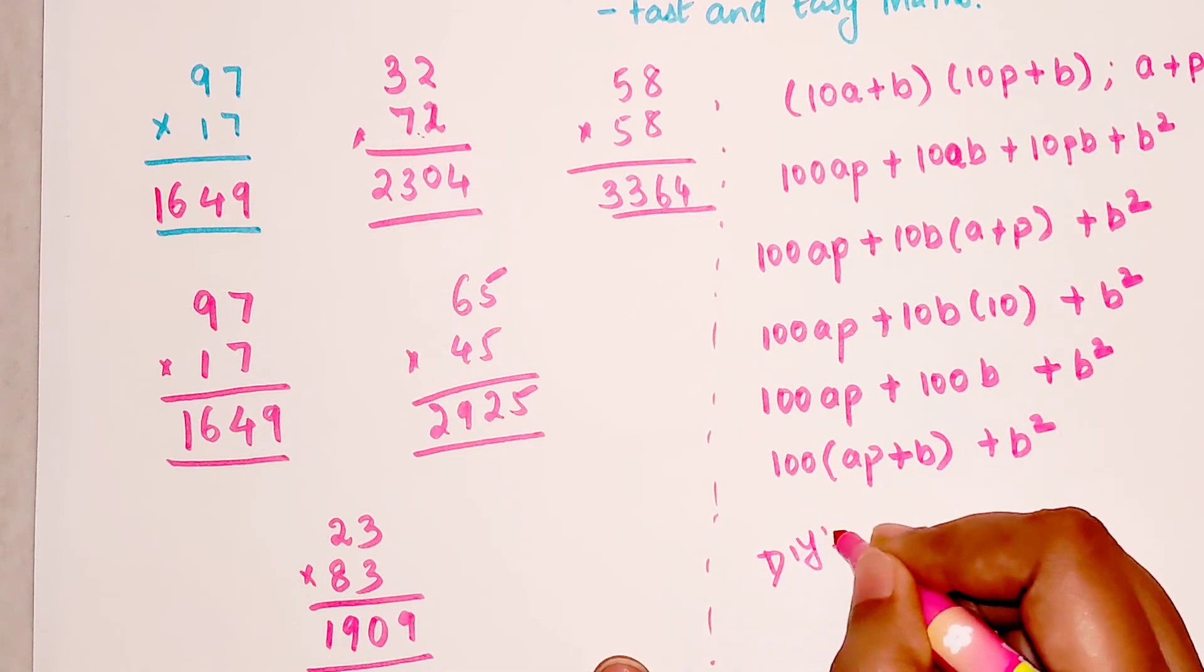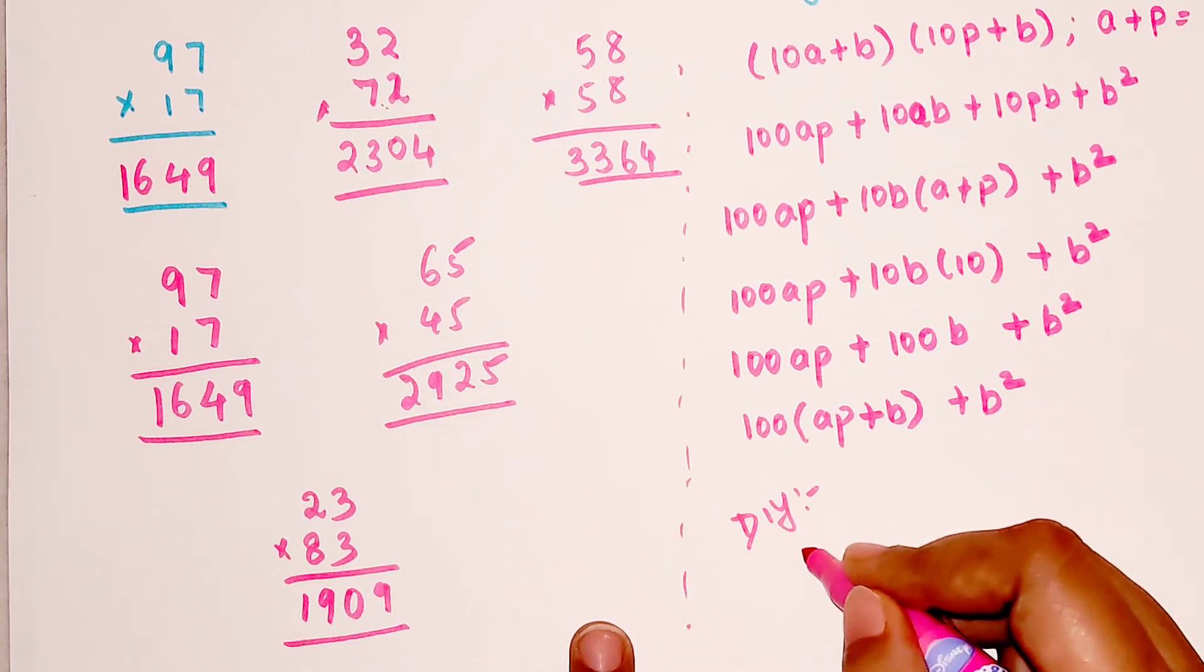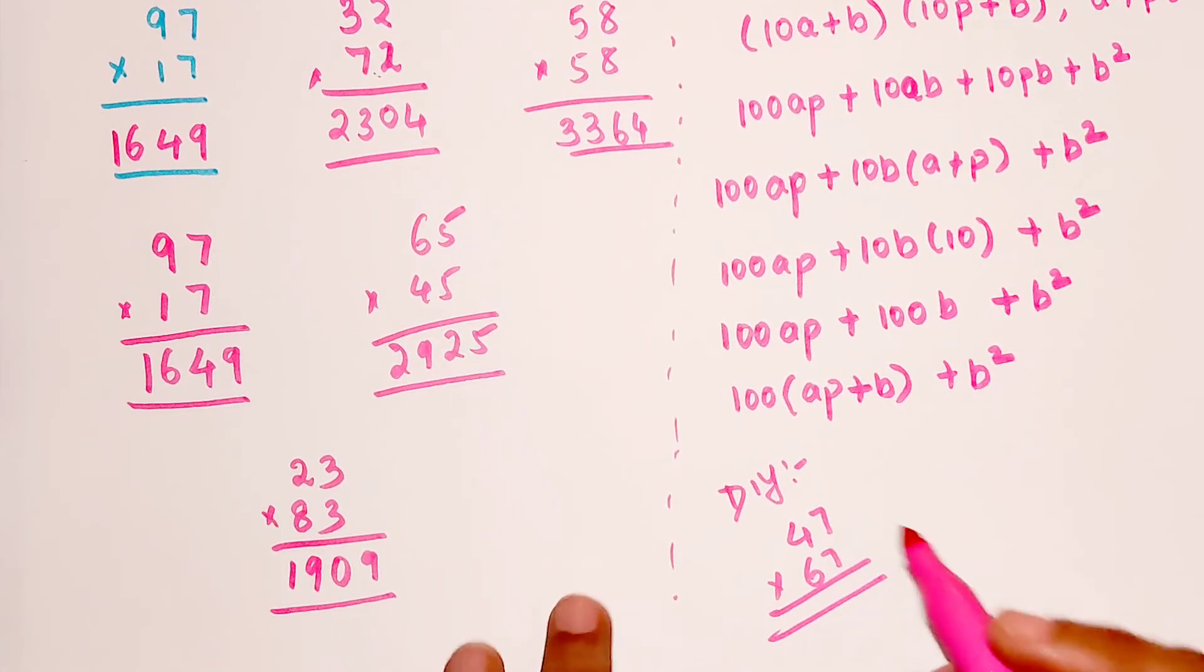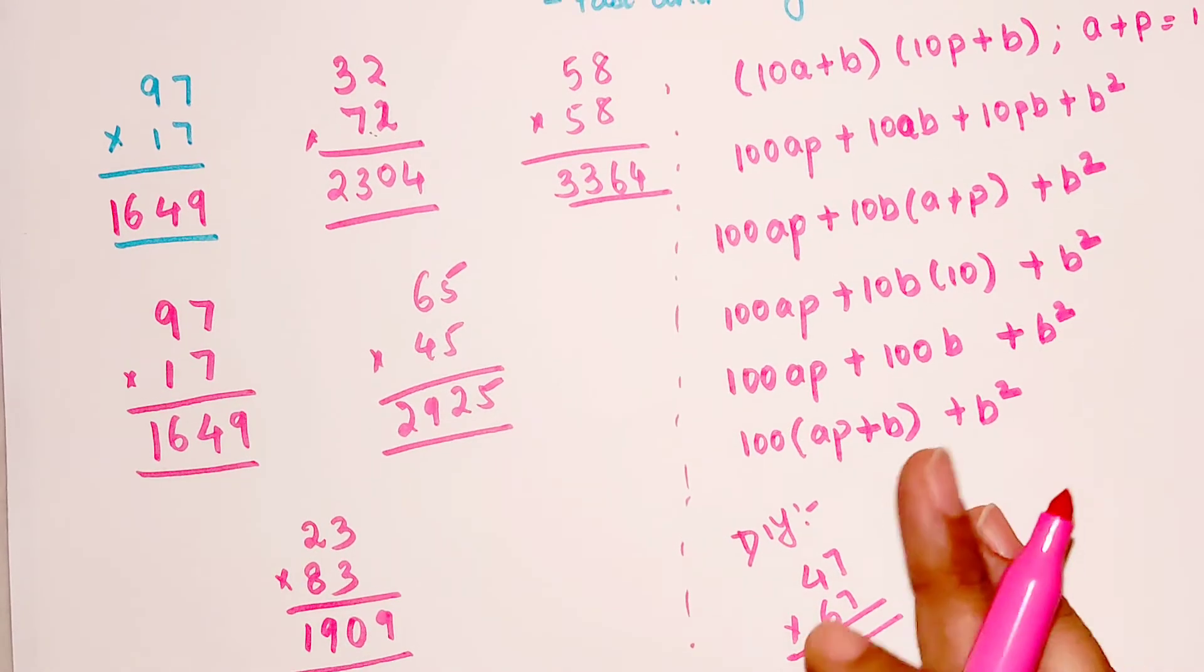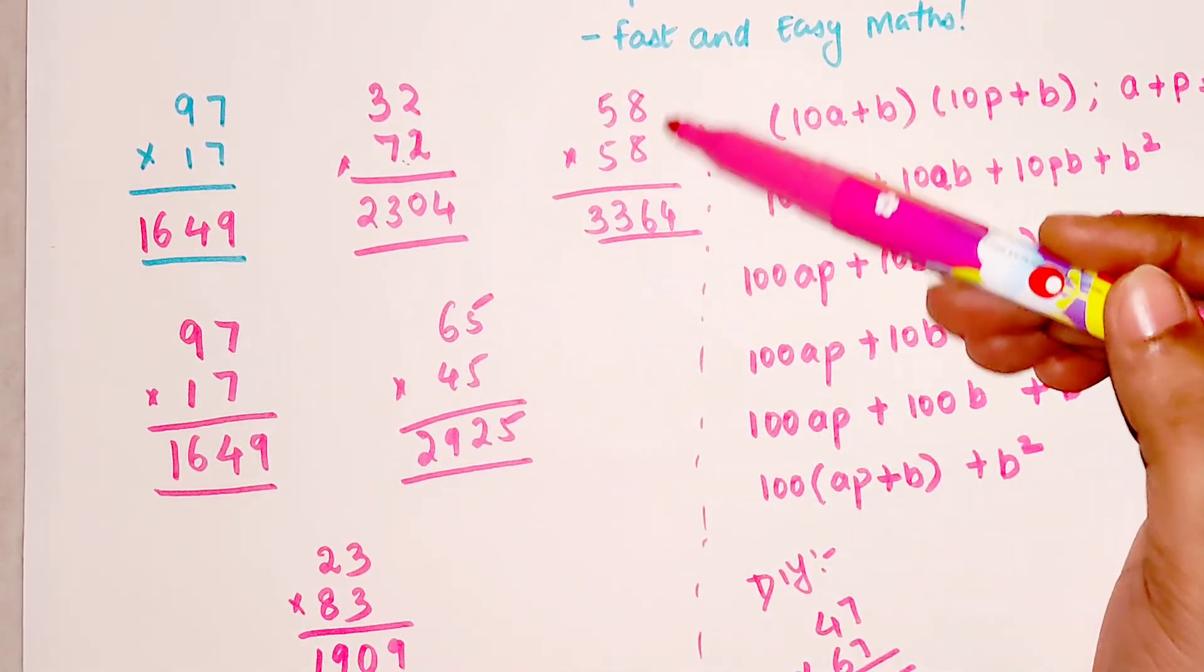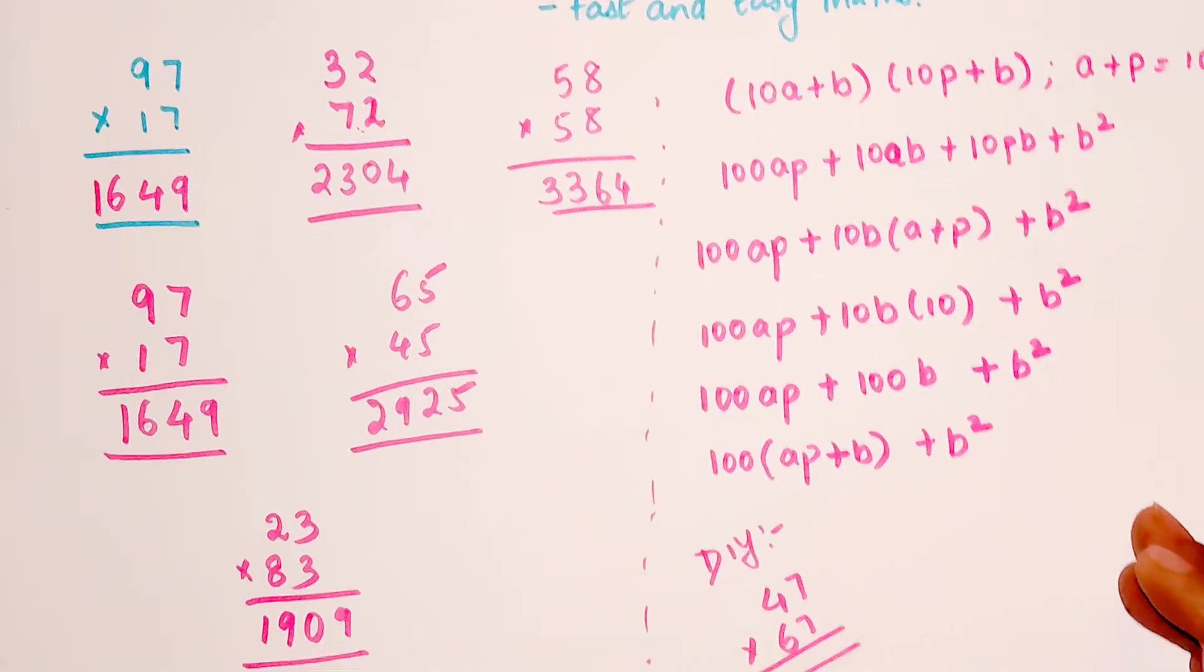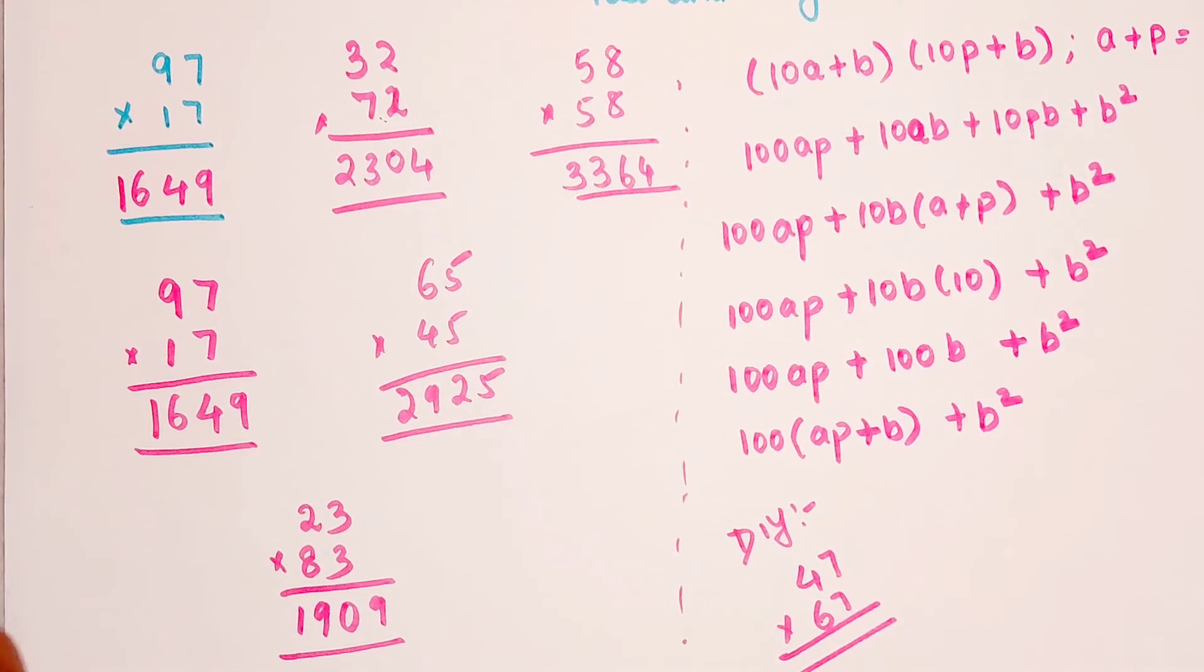So I hope you all have gotten this. Now time for your DIY. The question is I want you all to tell me what is the answer for 47 into 67. Very quickly use the particular trick and write down your answers in the comment section. One more time, just remember this trick will only work when the digits in the units place is same and the digits in the tens place add up to the digit which is 10.